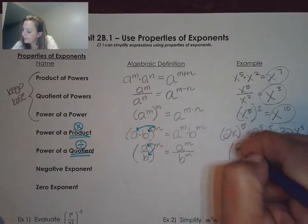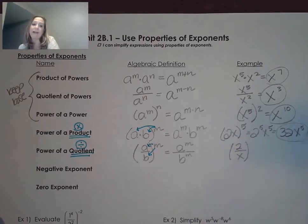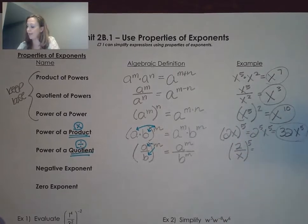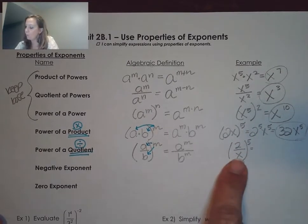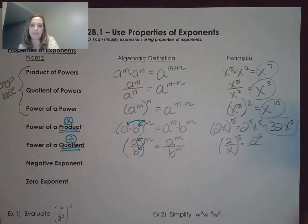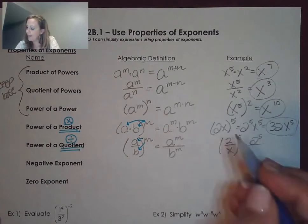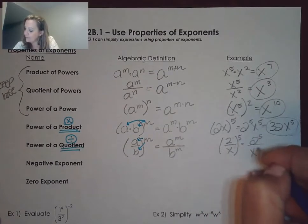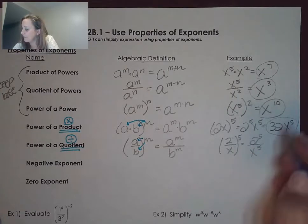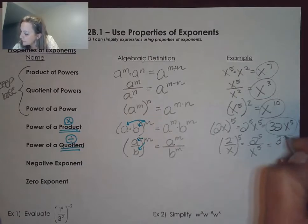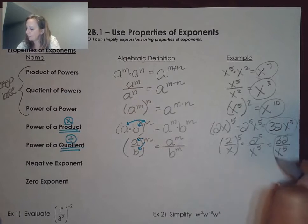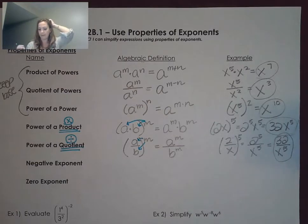An example would be 2 divided by x to the fifth. Because we have a quotient, we could apply the exponent of 5 to the numerator of 2 and turn that to 2 to the fifth, and then apply the exponent of 5 to the denominator to get x to the fifth. Since 2 to the fifth equals 32, we end up with 32 over x to the fifth as our final answer.